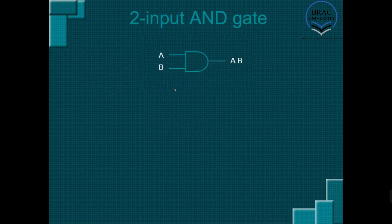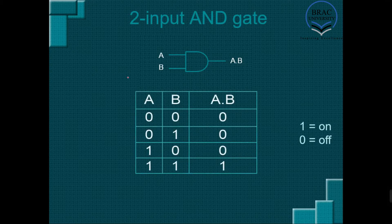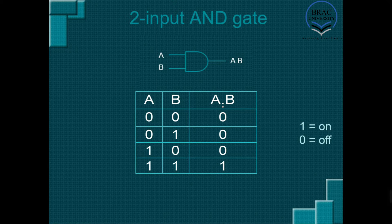Now let's talk about a two-input AND gate. Here we can see the truth table for a two-input AND gate. There are two different inputs A and B. Since there are two inputs, there will be four possible combinations: 0-0, 0-1, 1-0, and 1-1. Here we can see the output, which is written as A dot B. This dot indicates that we're implementing an AND gate — dot is the sign for an AND gate. In a truth table, 1 indicates ON and 0 indicates OFF.